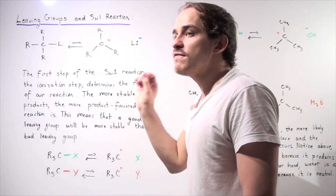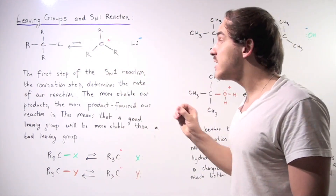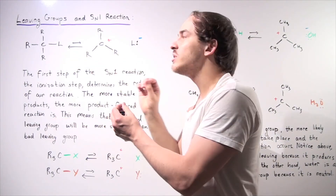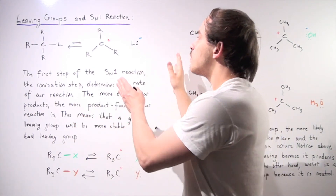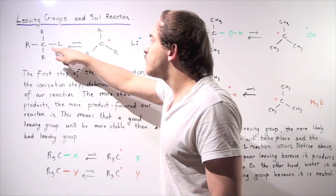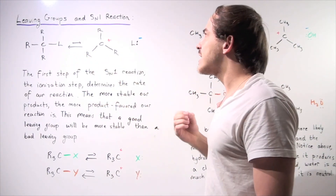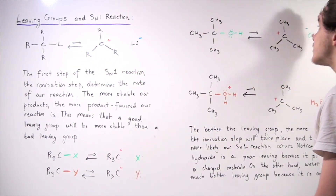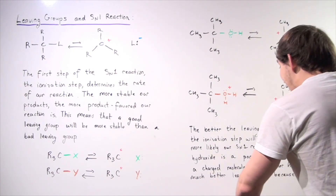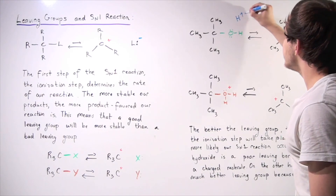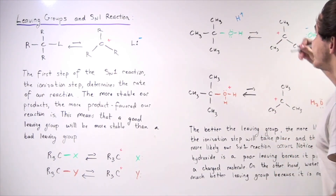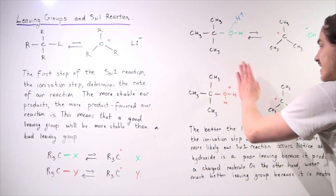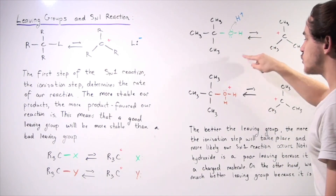The leaving group is very important in the SN1 reaction because if we have a poor leaving group, it will not dissociate and our products will not form. So if we have a poor leaving group, in order for the SN1 reaction to take place, we must first convert our poor leaving group into a good leaving group. For example, we could add an H⁺ ion, which can be taken up by the hydroxide's lone pair of electrons, converting the hydroxide into a water molecule — going from a poor to a good leaving group.